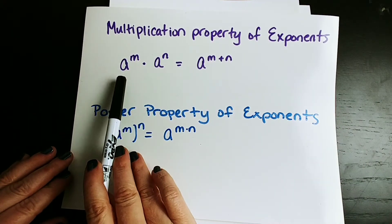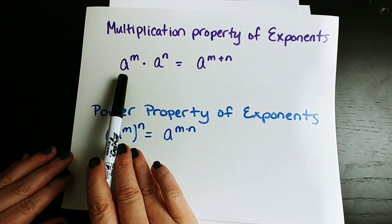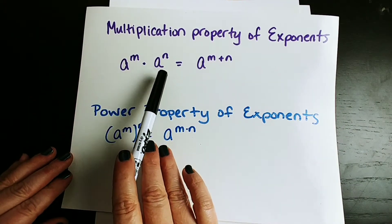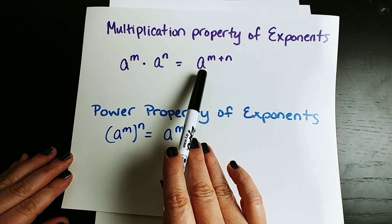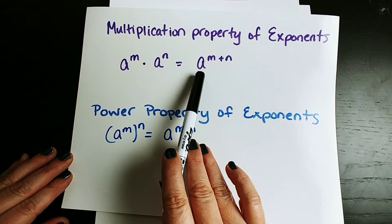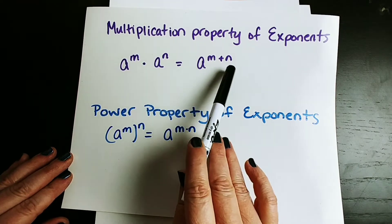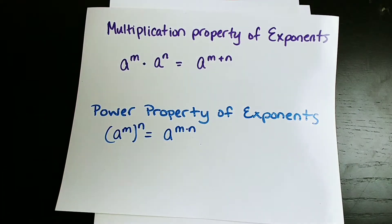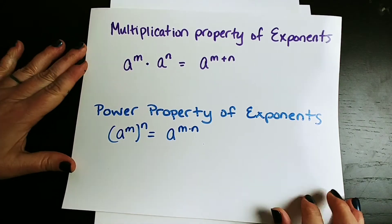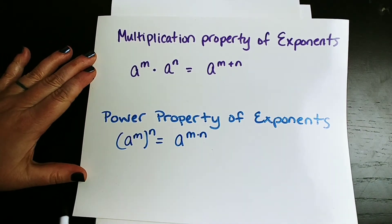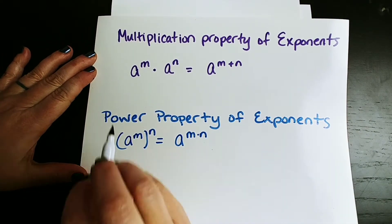If you have two things with the same base — a to the m times a to the n — you simply keep the base the same, and you add the exponents. Let's look at what this means; it's sometimes easier with an example.